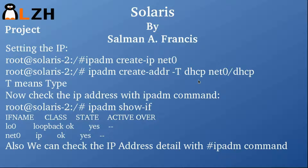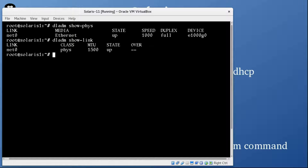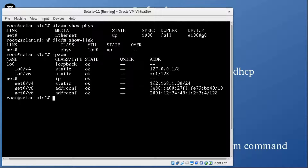Now let's move to how to set an IP address. We are going to create the IP address with the command IPADM — IP admin. The command is IPADM create-IP, then first it's going to prepare the interface, and then we are going to assign it with DHCP. Let's check what is currently available with IPADM — you can see it has a static IP of 192.168.1.30.